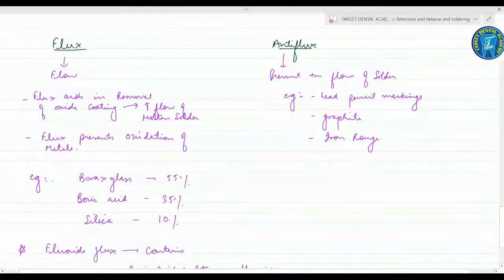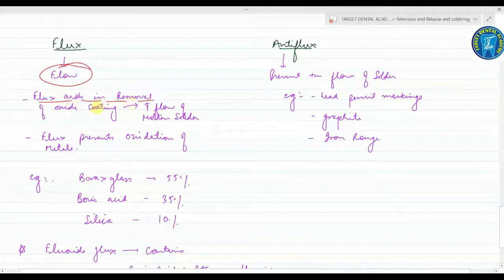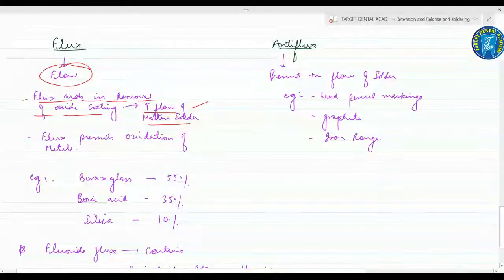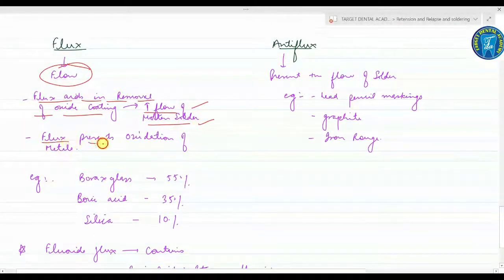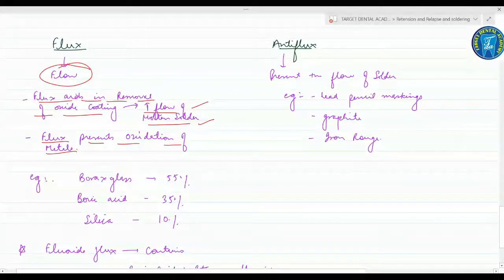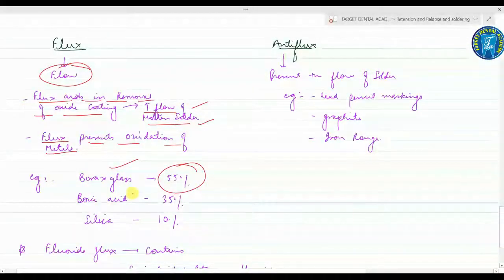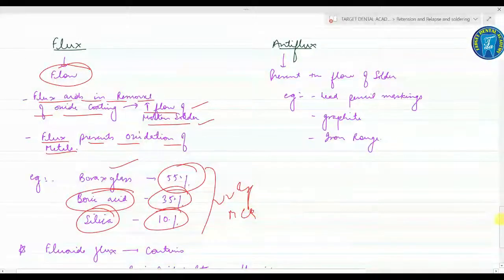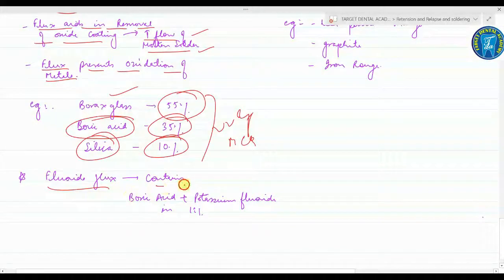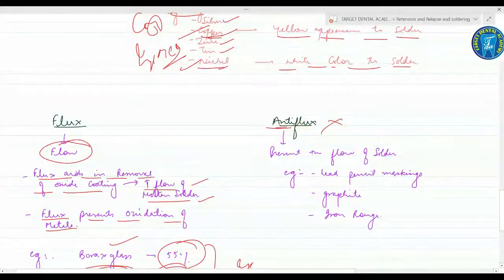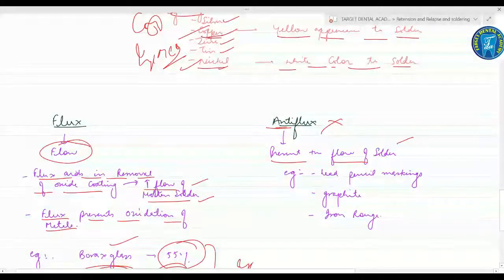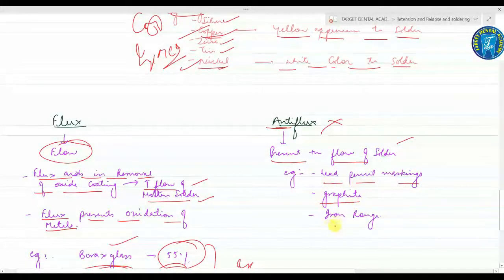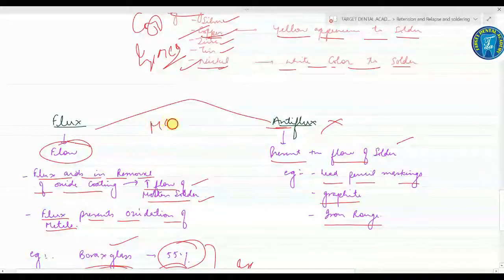Coming to the flux and anti-flux. Flux means flow - the flow of dental solder. Flux aids in removal of the oxide coating which leads to increased flow of molten solder. It also prevents oxidation of the metal. The flux are boric glass with 55% of its composition, boric acid 35%, silica 10% - very important MCQ. Next are the fluoride flux containing boric acid and potassium fluoride in ratio 1:1. Anti-flux means prevent - it prevents the flow of dental solder. The anti-flux are lead pencil marking, graphite, and iron rod. These are commonly asked MCQs.